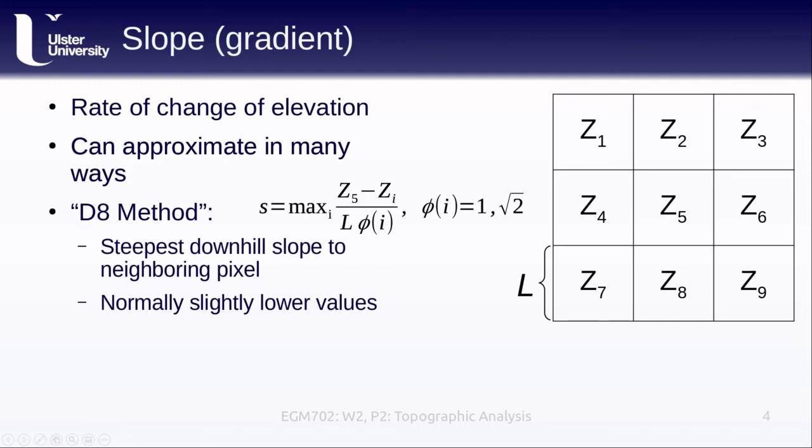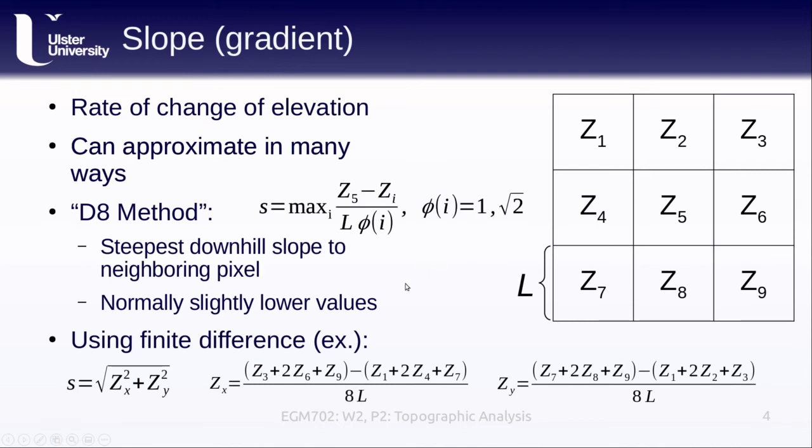This gives us the steepest downhill slope to the neighboring pixels, but it also gives us normally slightly lower values than other methods because the steepest downhill slope is not necessarily the steepest slope. We can also use a finite difference approximation.